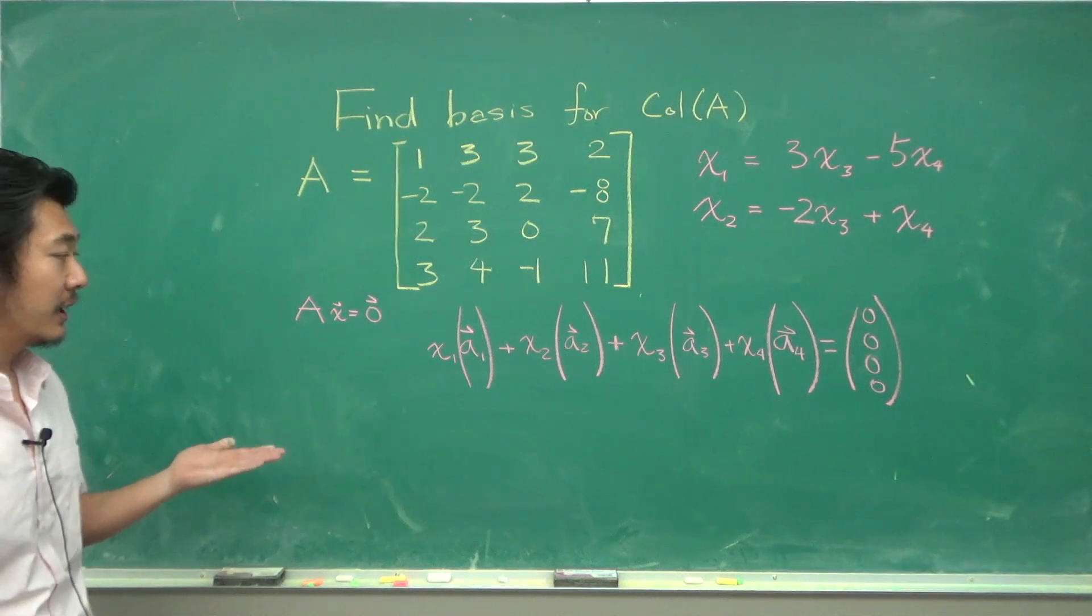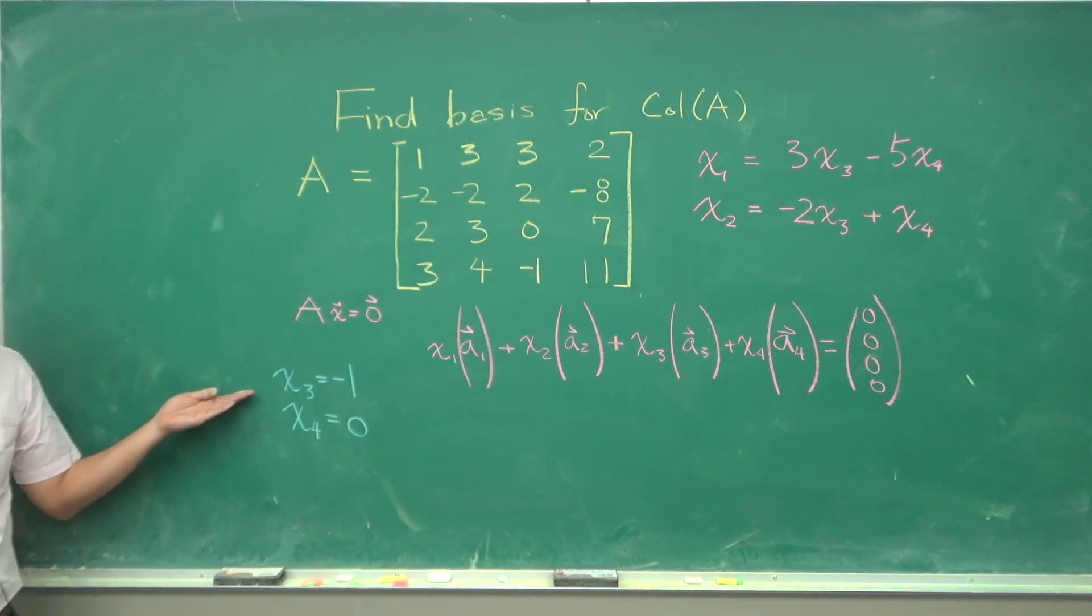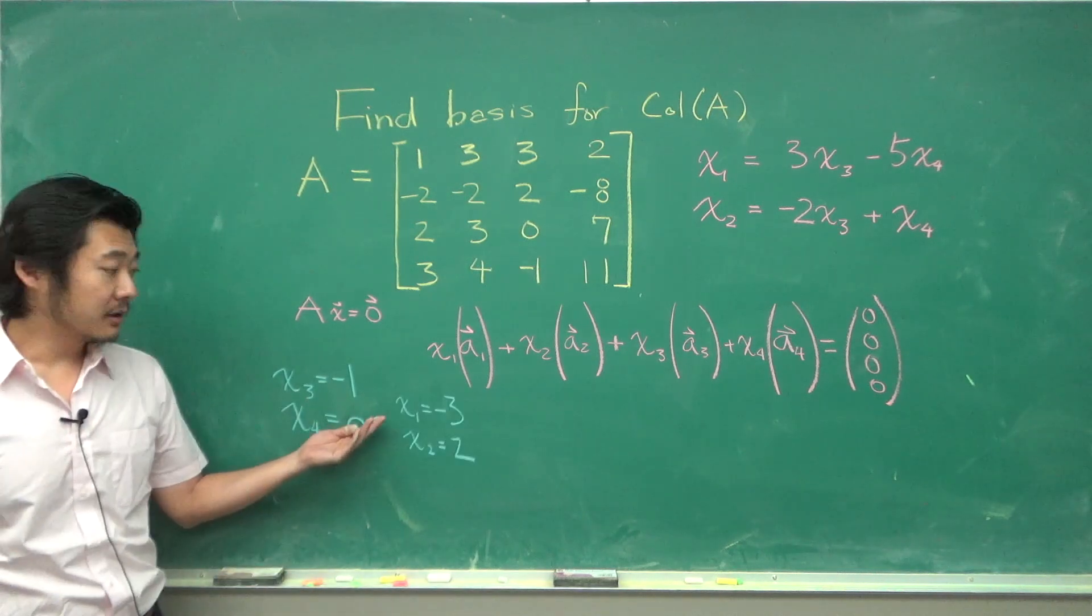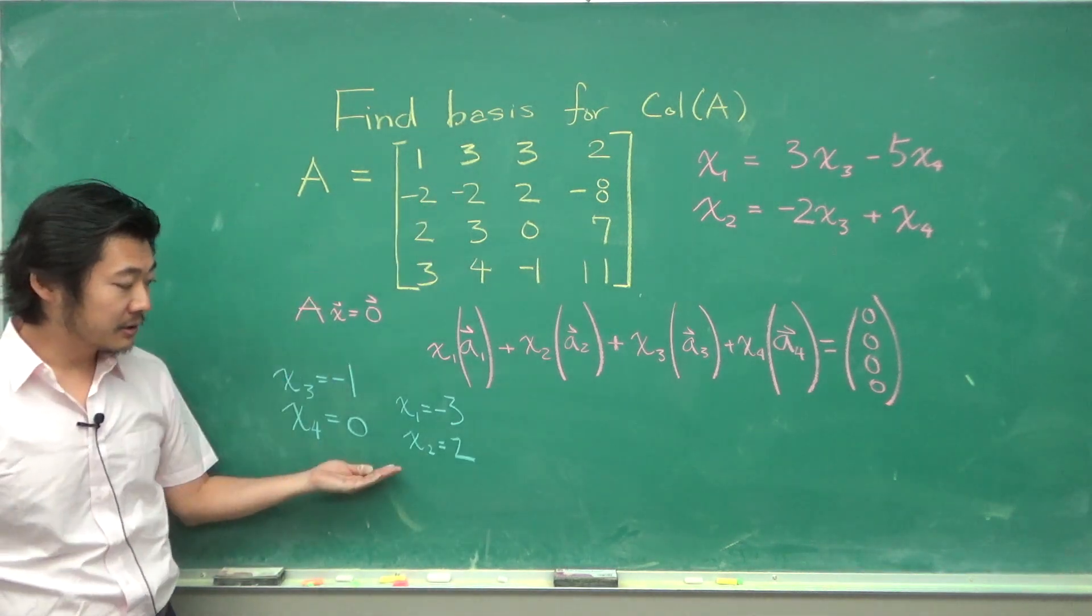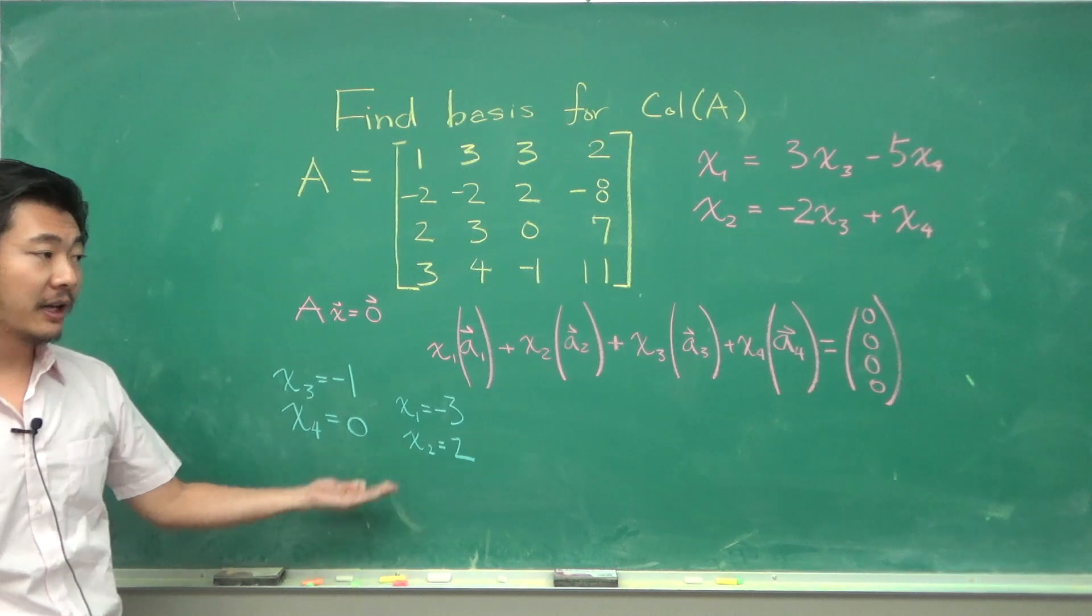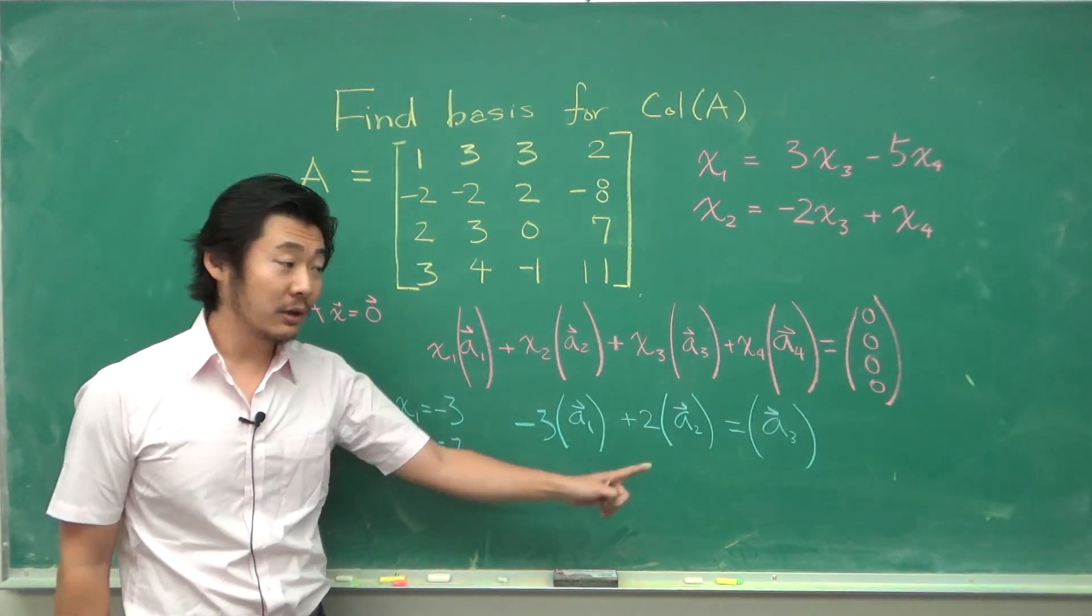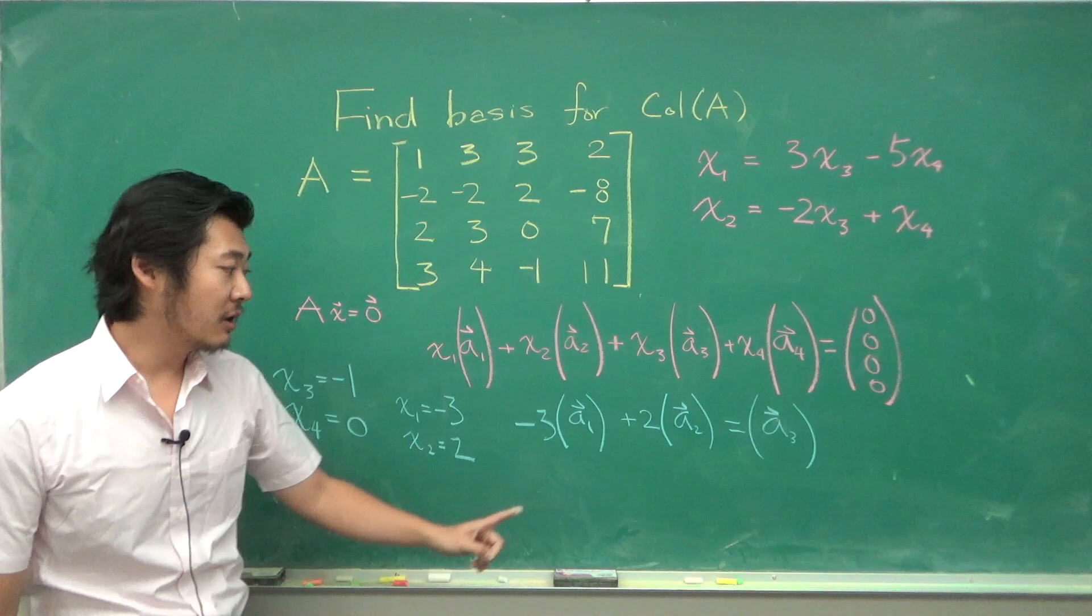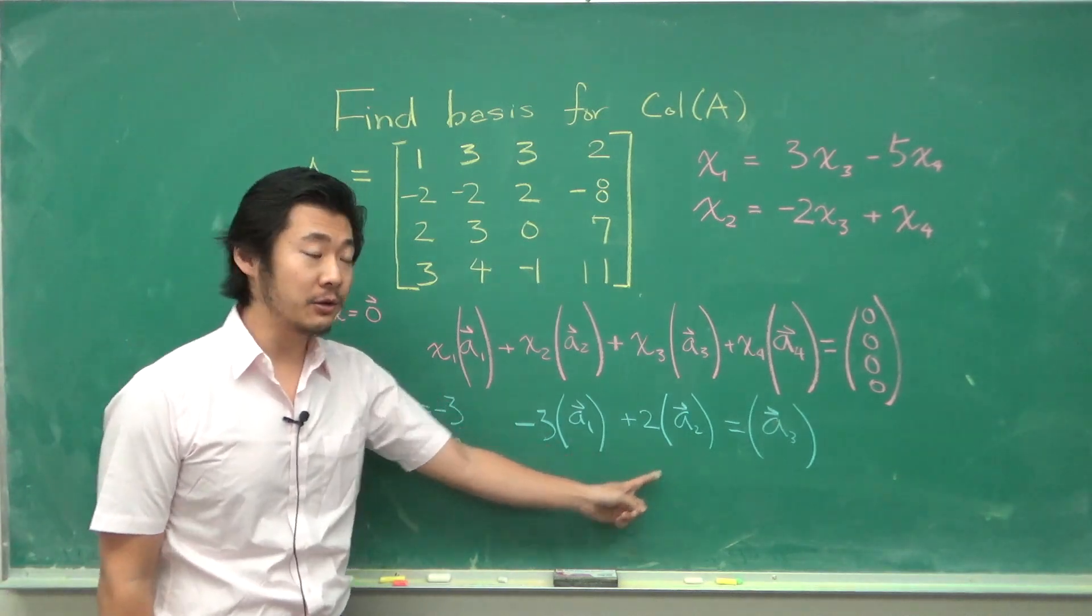So in particular let's pick x3 as negative 1 and x4 as 0. When we do that we get that x1 is negative 3 and x2 is 2. So plugging everything in we get that A3 can be written as a linear combination of A1 and A2 where these are the coefficients.